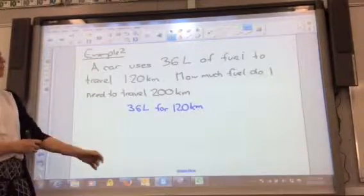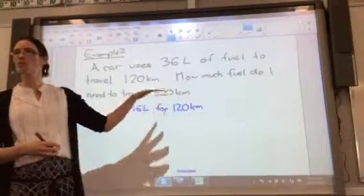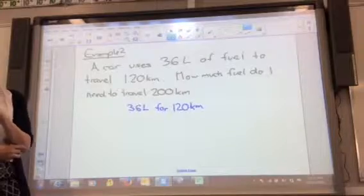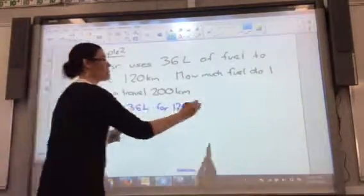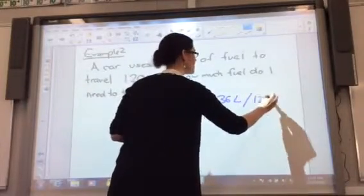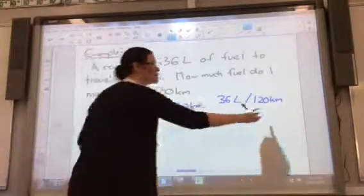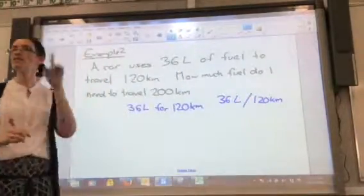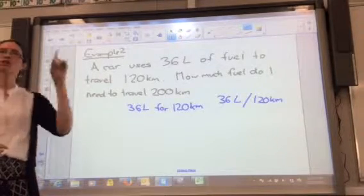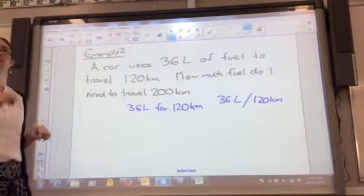For this question, I'm going to work out how many litres I use per kilometre, because I know I want to find 200 kilometres. It's going to make it a bit easier. So as a rate, it would be 36 litres per 120 kilometres. We are going to change that. Instead of being per 120 units, we just want one unit. We're going to get to 200, but we're going to get there going via one unit. The unitary method is to find one unit. So what do I do?